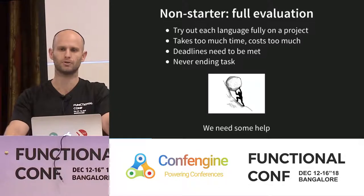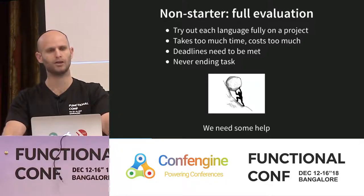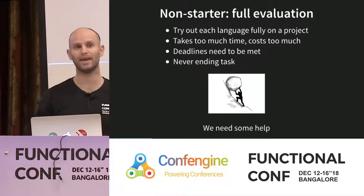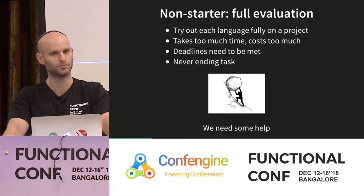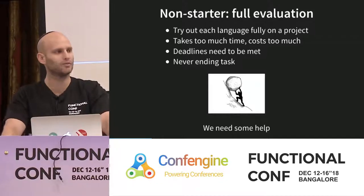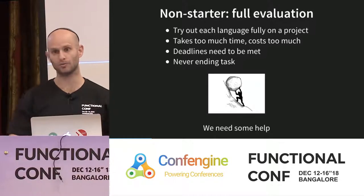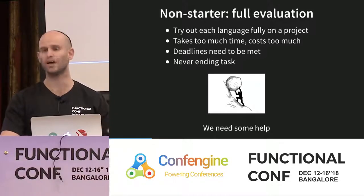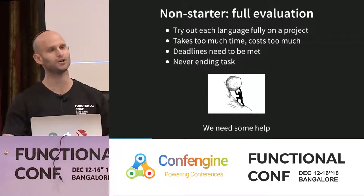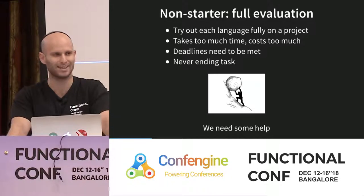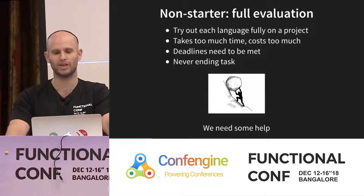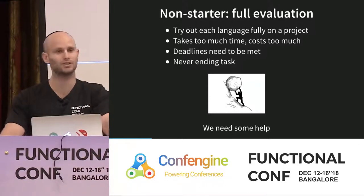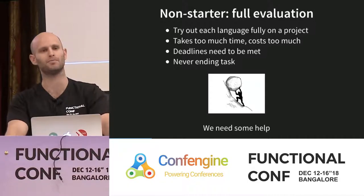What do you do if none of that applies — if you're in a domain where you could use legitimately 20, 30, or 100 different languages? One non-starter approach: fully evaluate every single one. Take all 100 languages and implement your full project in each one. This obviously won't work — it takes too much time, costs too much, and will destroy your mental health. At the rate languages come out, this is a never-ending task. This is Sisyphus, constantly pushing the boulder up the hill.